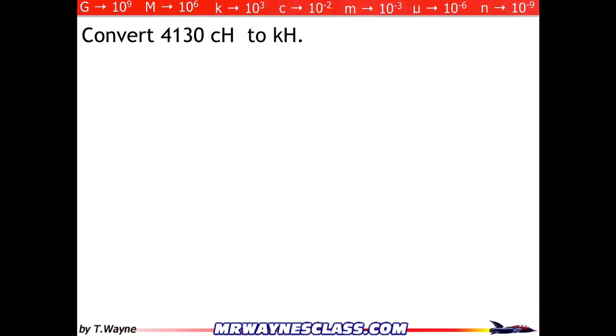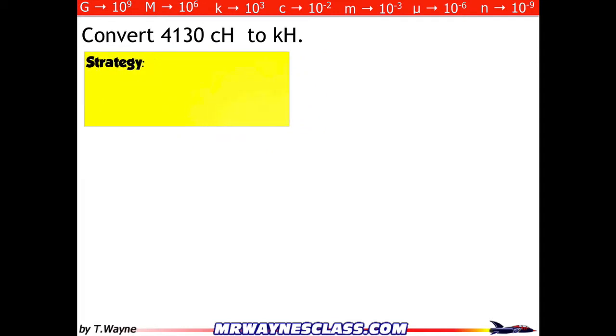First off, what you've memorized are the most common prefixes we're going to use in this course. I can see here that I'm going from centi, 10 to the minus 2, to kilo, 10 to the third. Here's my strategy: I'm going to replace the C in centihenrys with 10 to the negative 2 mathematically. Then I'm going to convert the power to 10 to the third. And then finally, I'm going to replace it with 10 to the negative 3 just with a K. It's really straightforward.